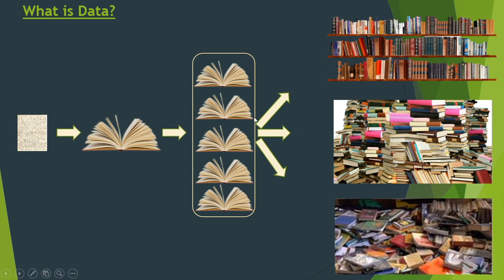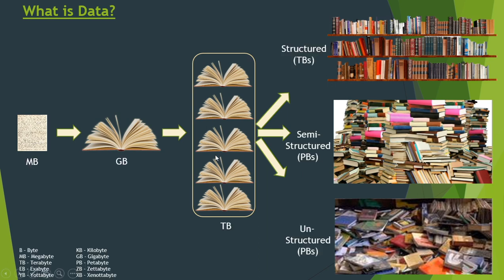In the second picture, some books are organized properly but some are still lying around — we call that semi-structured, half structured and half not. In the top picture, all books are organized in a library on racks — that is properly structured. So we start from a single page with small information and it grows to a library with a huge amount of information.